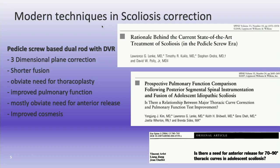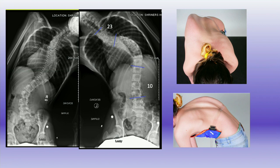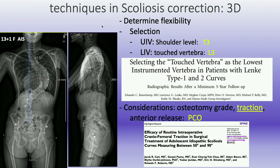Looking at a case example: this is a patient who's almost 14, has never been treated with a brace, was conservatively treated with a chiropractor, has a normal MRI, mild mid-scapular pain, and some right trunk shift. Looking at her flexibility X-rays, it's a semi-flexible curve with the upper thoracic and lumbar curve being considered flexible — under 25 degrees. Based on that and the center sacral line and the last-touch vertebra, we determine where our proximal and distal levels would be.